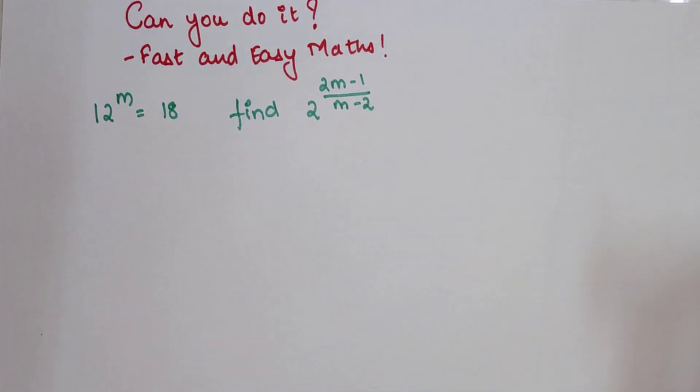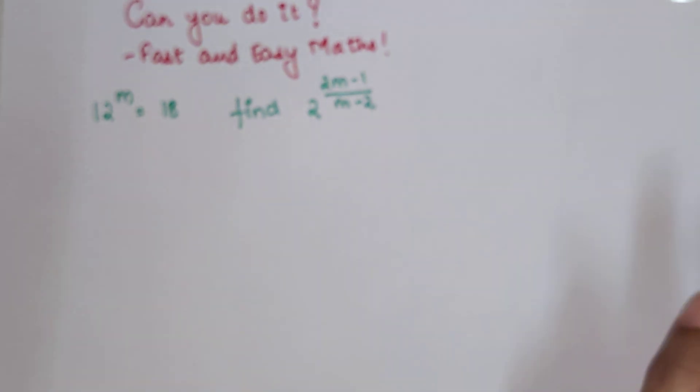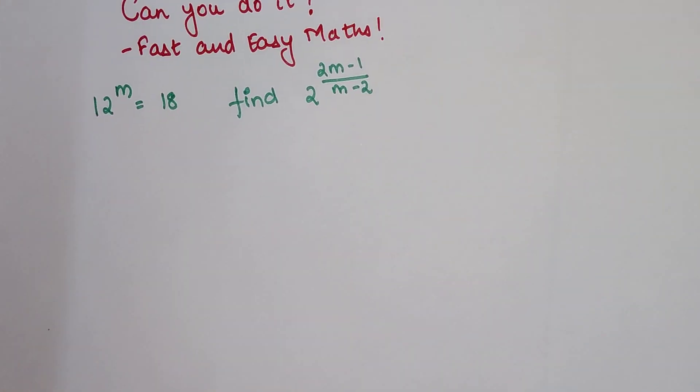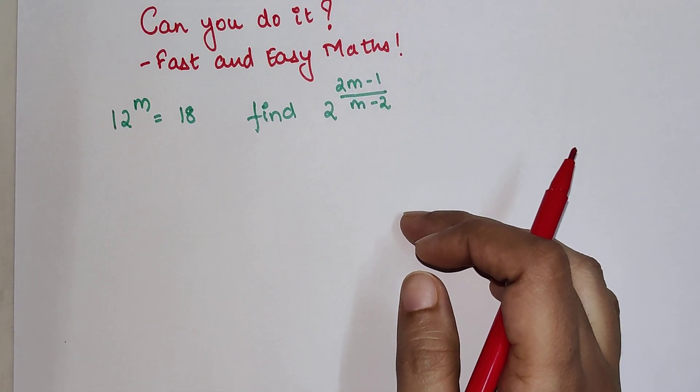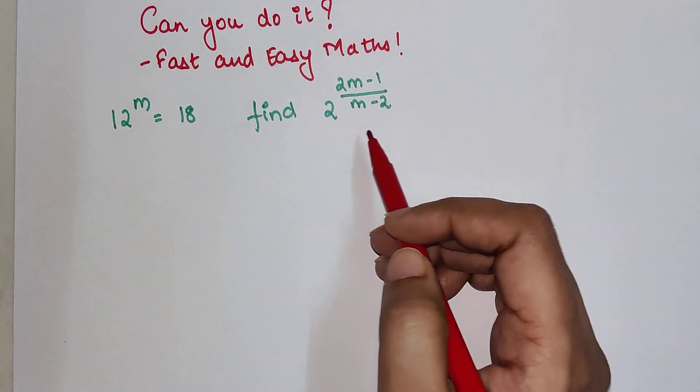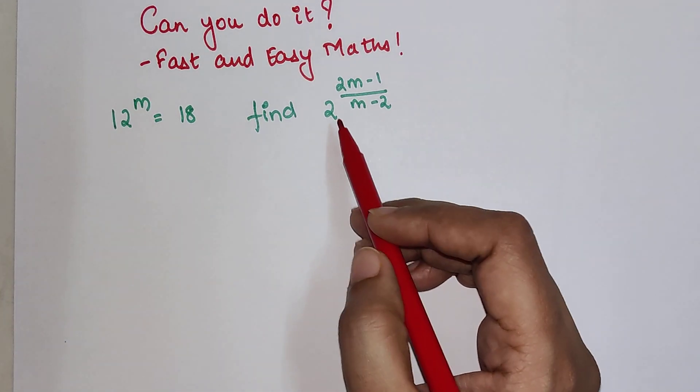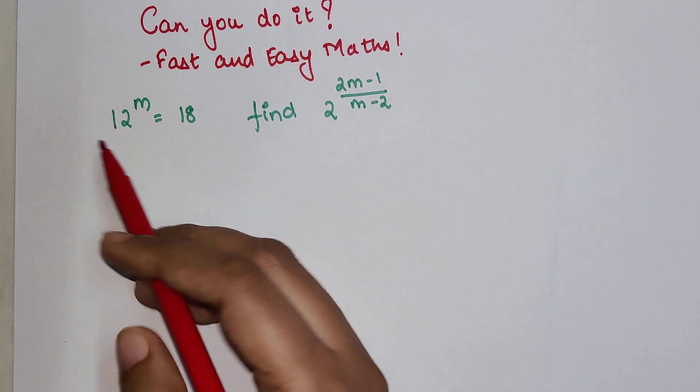All you have to do is just use your basic knowledge of indices. Here what we will do is we'll start with this one because this looks a bit complicated, and going from 2 up to 12 or 18 is a bit difficult.